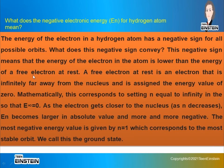The energy at infinity is zero, and as the electron gets closer to the nucleus, En becomes larger and more negative — meaning the energy associated with that electron decreases as it approaches the nucleus.